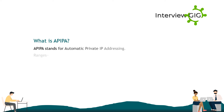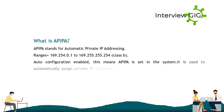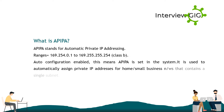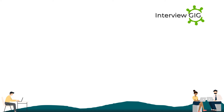What is APIPA? APIPA stands for Automatic Private IP Addressing. Its range is 169.254.0.1 to 169.254.255.254, Class B auto-configuration enabled. It is used to automatically assign private IP addresses for home or small business networks that contain a single subnet, have no DHCP server, and are not using static IP addresses.